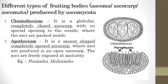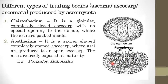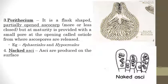Next is Apothecium. It is a saucer-shaped, completely open ascocarp. You can see the ascospores packed inside. It is a completely open ascocarp with a saucer shape — that is called Apothecium. Examples include Pezizales and Helicotiales, which come under the Apothecium group.